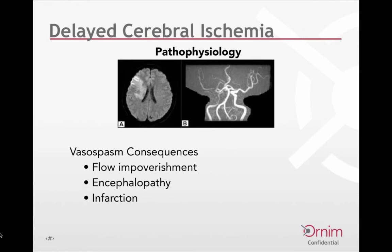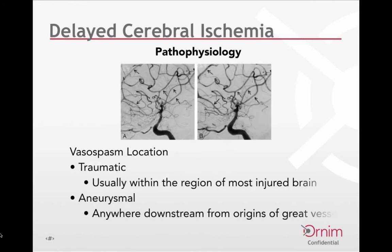The consequences of vasospasm in terms of delayed cerebral ischemia are stepwise. As flow becomes impoverished, neuronal changes start to take place, the neurological exam starts to get altered, and encephalopathy is generally the first change noted. As flow becomes more and more limited, tissue ischemia progresses to infarction. A whole vascular bed involving a right middle cerebral artery territory can become impoverished of flow, and infarction ultimately takes place. This is what we're really trying to prevent.